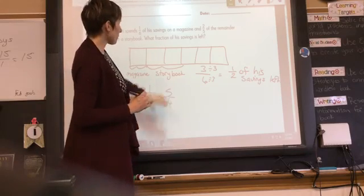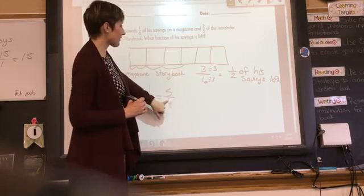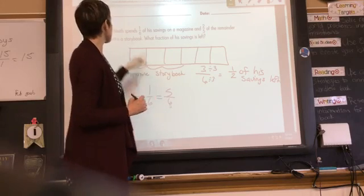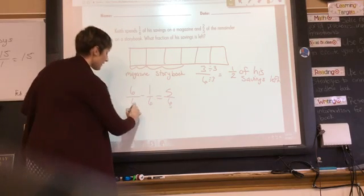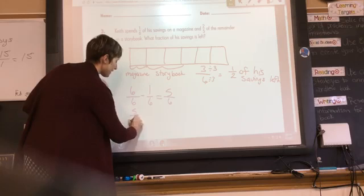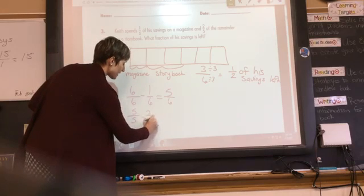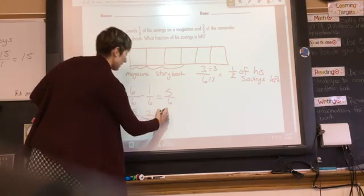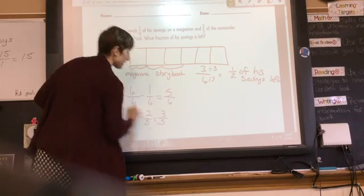And we know that of the remaining, of the five-sixths, two-fifths is spent on a storybook. So, if our remainder is five-fifths, two of those fifths are spent on a storybook. That means he has three-fifths left.